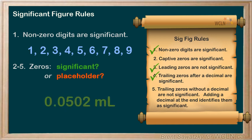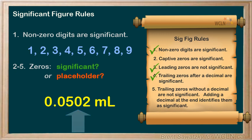What if our measurement had a zero in the middle, like 0.0502? The zero in the middle isn't there to show magnitude — bigger or smaller. Also, any other digit could have been there, but they wrote a zero. Therefore, it must be significant. It's not a placeholder; it has meaning to the measurement's precision. So this one also has three sig figs.